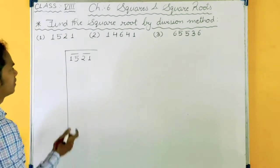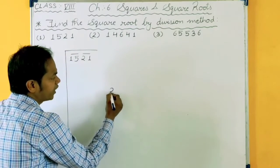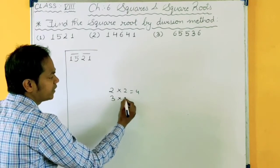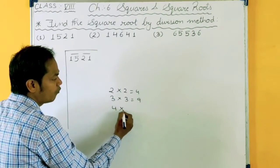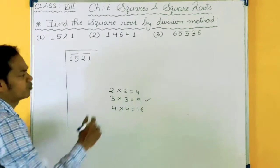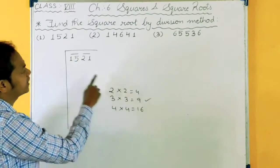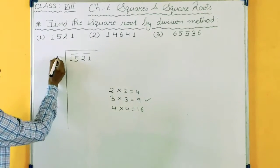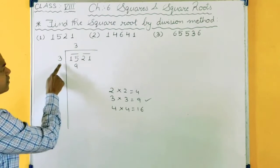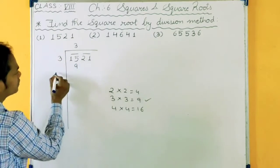Second important thing is the number that you take here, the same number will come here also. Suppose I am taking 2. So 2 times 2 is 4, 3 times 3 is 9, 4 times 4 is 16. 9 is more suitable because 4 is smaller than 15 and 16 is bigger than 15. So I will take 3. The number that you take here, the same number will go up.